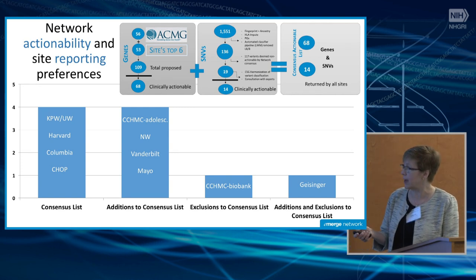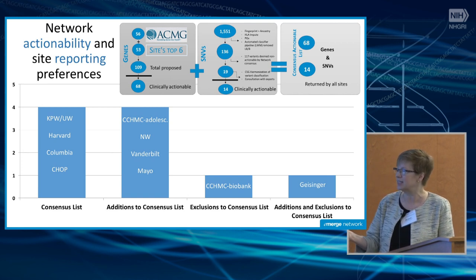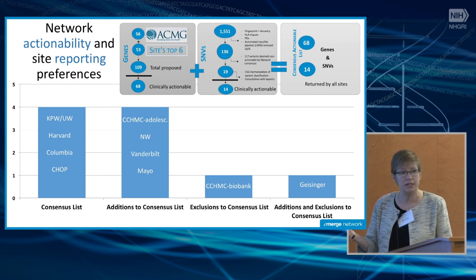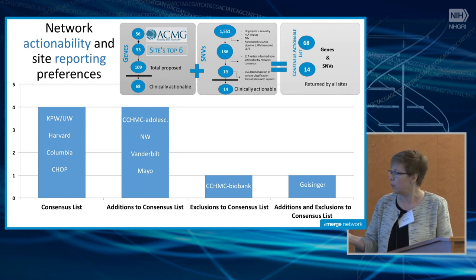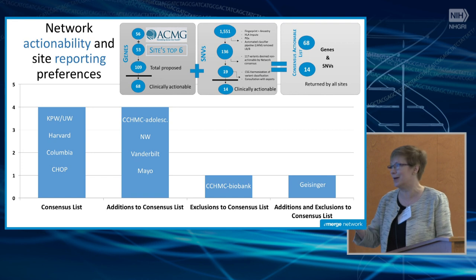This is what we're actually returning across sites. There's a group of sites identically returning the consensus list — this doesn't include pharmacogenetics. There's a group that's added to the consensus list with some genes specific for the traits they're looking at. One of the pediatric sites is not returning some of the adult variants, for obvious reasons. And Geisinger has its own model that we would spend a lot of time on, so we won't.